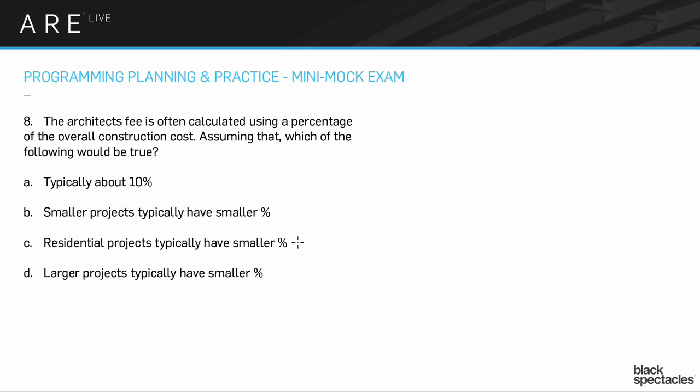We have a couple of potential answers here. Typically about 10% would go to the architect of the overall construction cost. B would be: smaller projects typically have smaller percentages. C is: residential projects typically have smaller percentages. D: larger projects typically have smaller percentages.